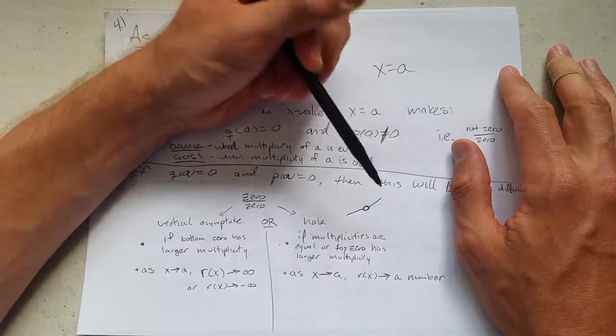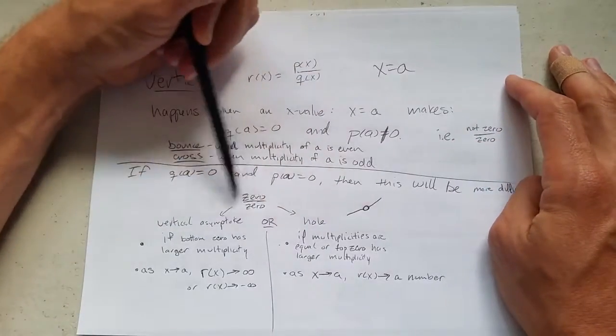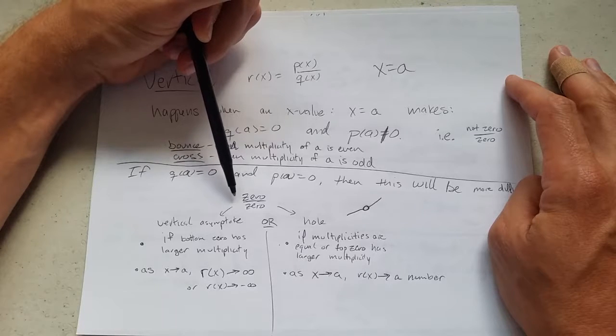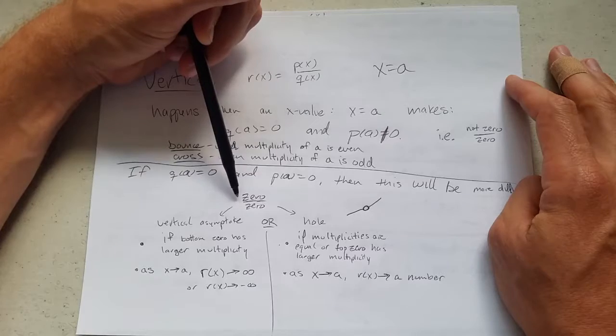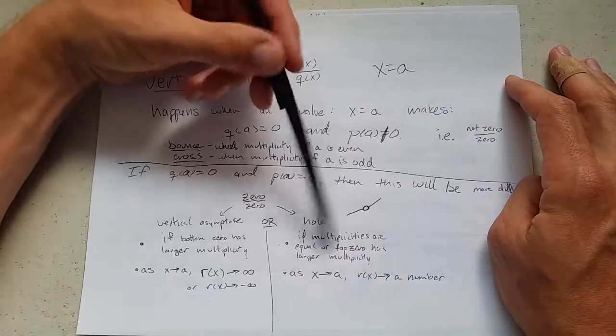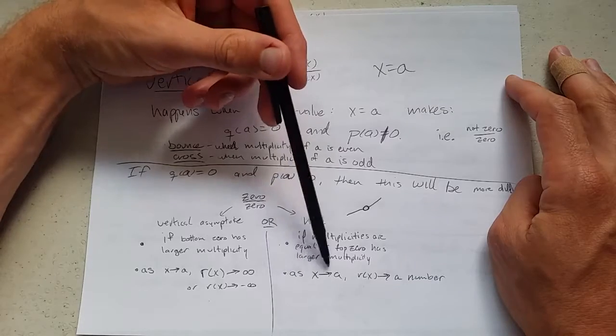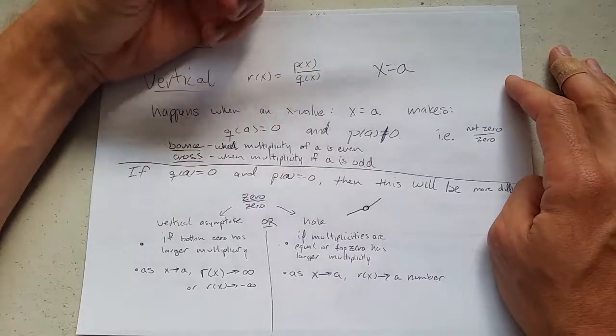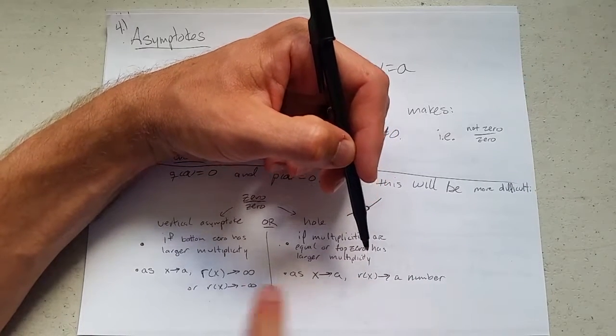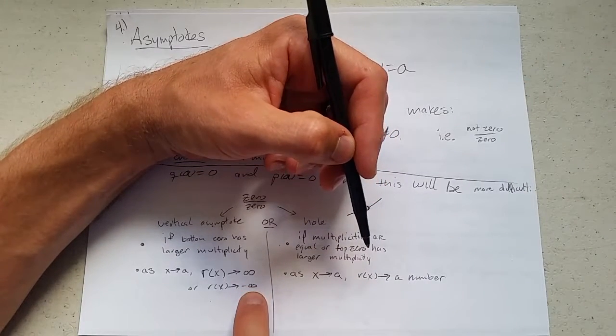On your final exam, I definitely will stay away from the 0 over 0s. This will only happen on your homeworks and possibly a quiz. So it's a little bit too tricky to put on a final exam, so I'm going to keep this off of a final. And if you don't like multiplicities, you can also think when x is close to a, r of x gets close to a number, not infinity or negative infinity.